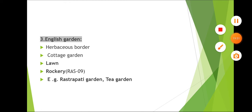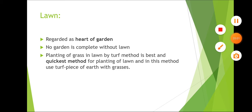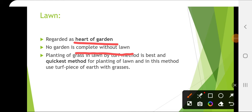English Gardens have herbaceous borders, cottage garden, lawn and rockery. Examples include Rashtrapati Garden and Tea Garden. Lawn is known as the heart of the garden — no garden is complete without a lawn. Planting of grass in a lawn by turf method is the best and quickest method, using turf pieces of earth with grasses.